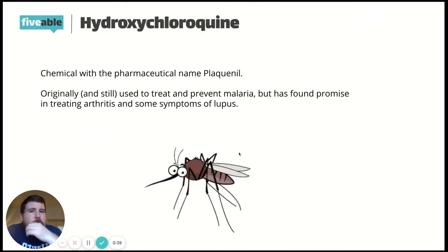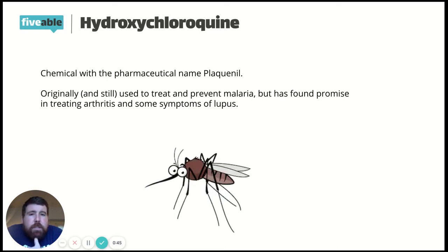Originally, hydroxychloroquine was used to treat and prevent malaria. Recently, it's also found some promise in treating symptoms of arthritis and lupus.